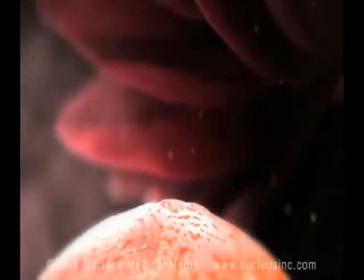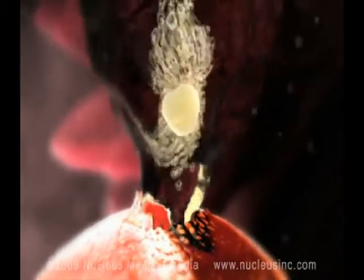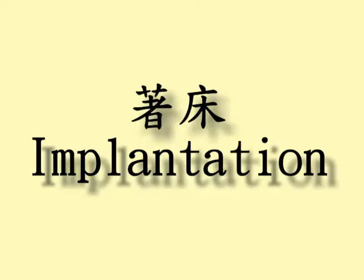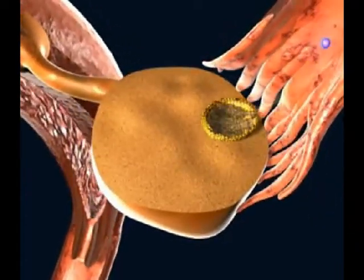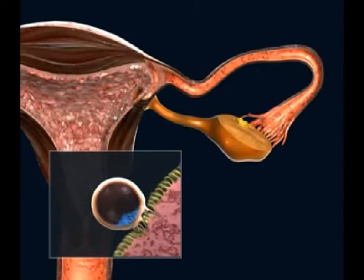The follicle swells until it bursts open, ejecting the egg and fluid from the follicle into the abdominal cavity. In response, the follicle process ensues, which is called ovulation — releasing the egg toward the uterus.